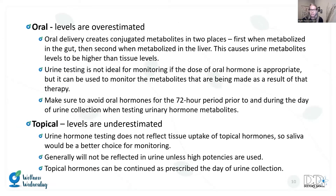For urine testing, it's a little different than you might be used to with other methods. With oral supplementation, levels are overestimated — oral delivery creates conjugates in two places, first the gut and then the liver, so urinary metabolites raise higher than tissue levels. It might not be ideal for monitoring dosage, but it can give some indication of how things are moving through. For topicals, urine hormone testing does not reflect tissue uptake, so saliva may be better; if using urine, topical levels are typically underestimated.